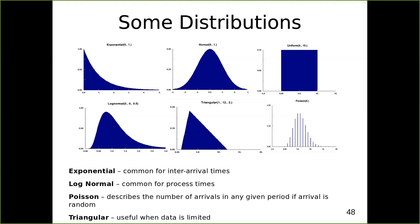The uniform distribution basically says every value has an equal chance of being selected. If I said give me a number between 1 and 10 at random, that would follow a uniform distribution. It isn't so useful for capturing real-world variability, but it is tremendously useful when we actually do modelling, because it allows us to sample a random number which then determines what things might happen.